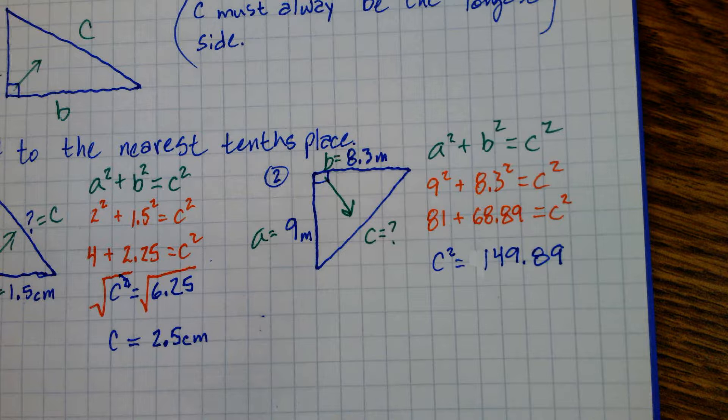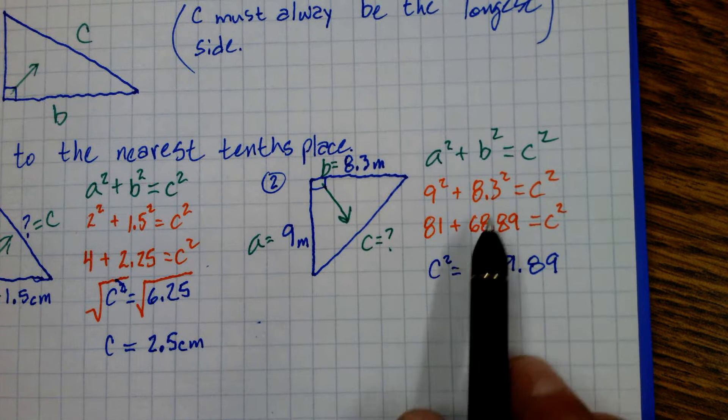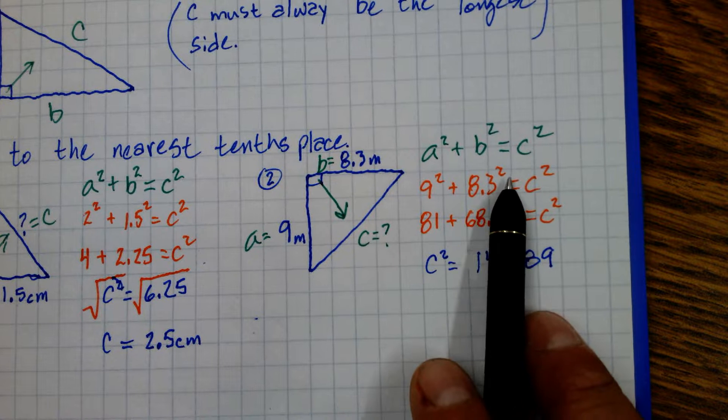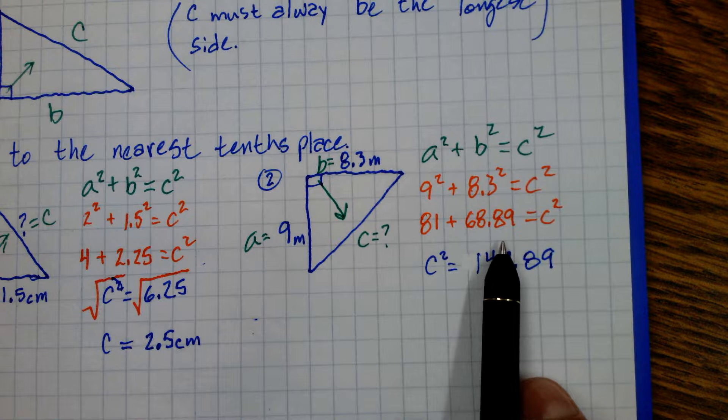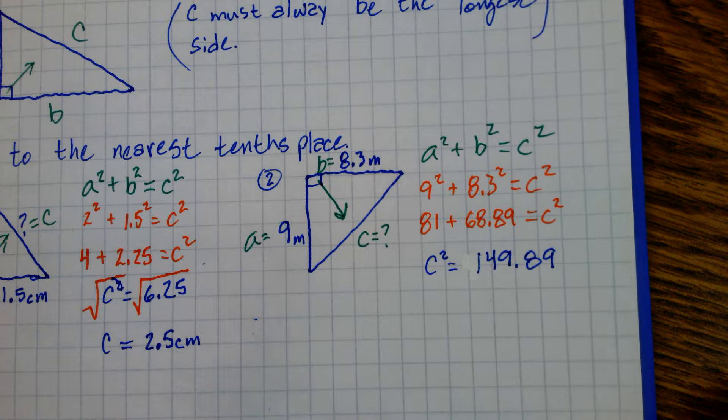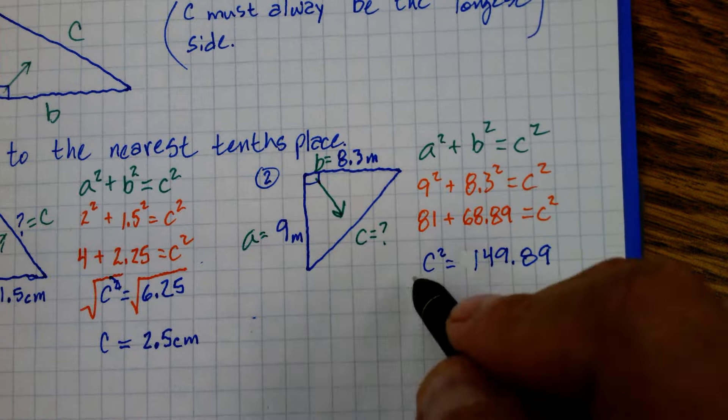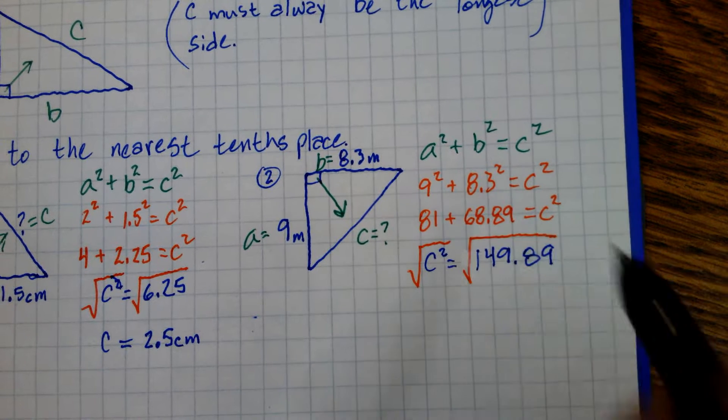I got 9 squared so that's 81. 8.3 squared for B squared. So that's 68.89. When I added those I got 149.89 and now I just have to square root to get my answer.